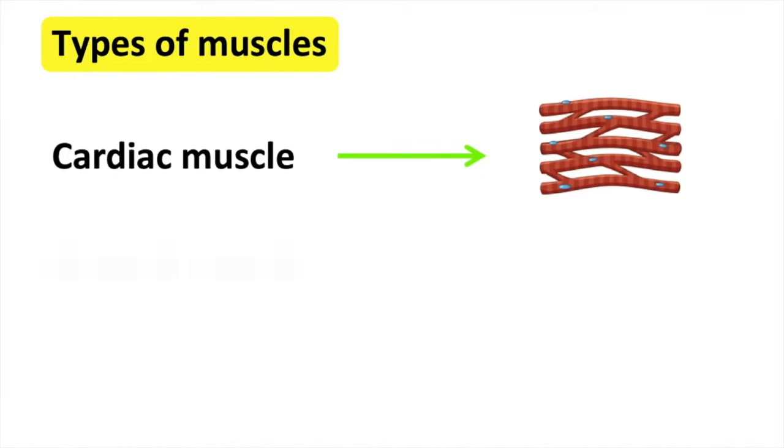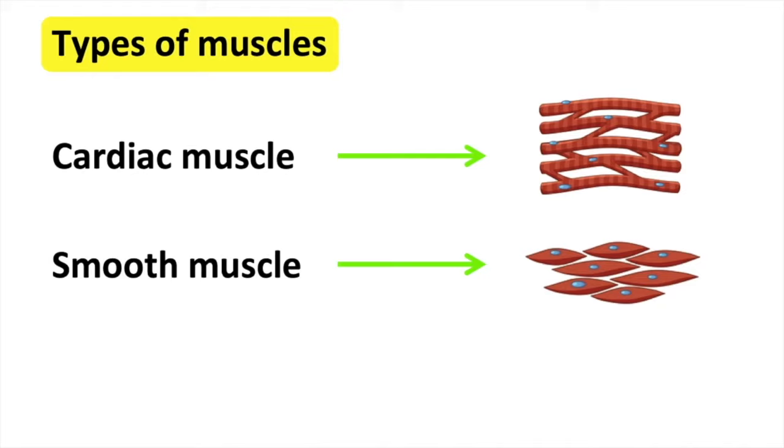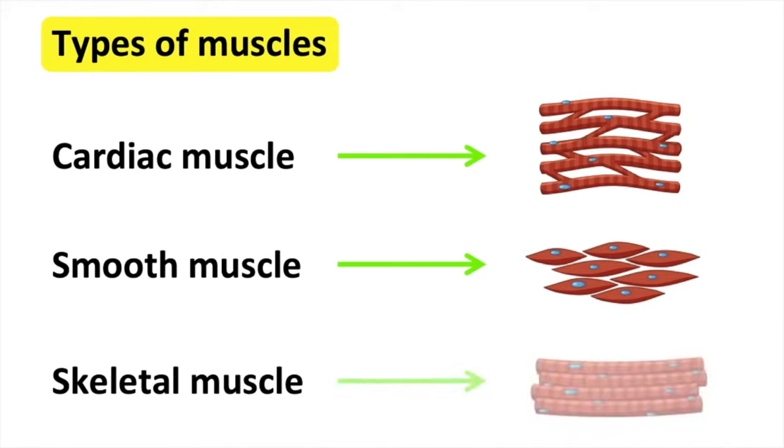There are three types of muscles in the human body: cardiac muscle, smooth muscle, and skeletal muscle.